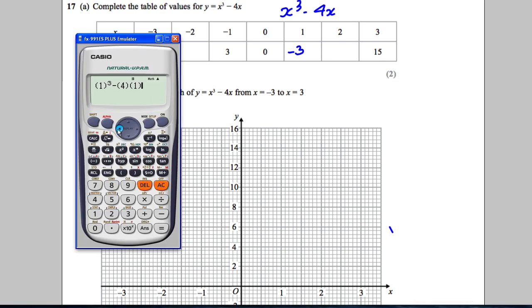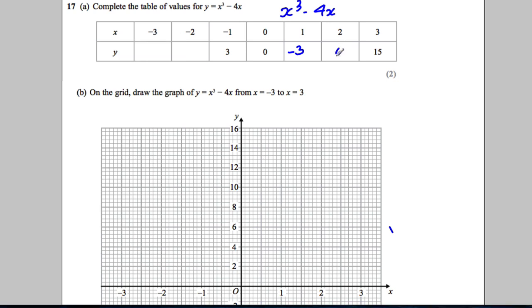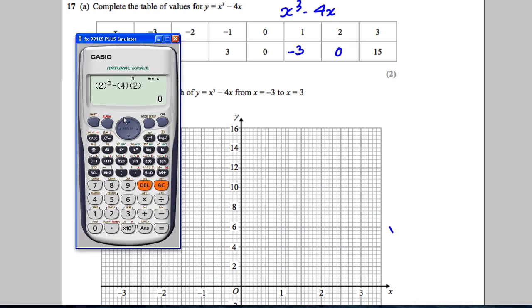Then what we could do is go back to this calculation and substitute in the other values. So substitute into there instead of the 1, and we get 0. Then we go back and substitute in -2, so I'm going to change that to a negative and change that to a negative, and we get 0 again. And then we're going to substitute in -3, so change it to -3 and change it to -3.